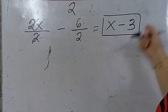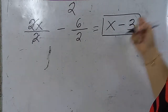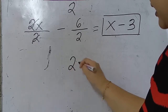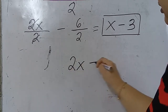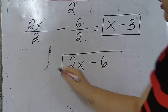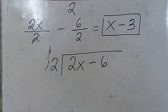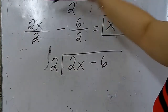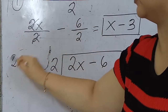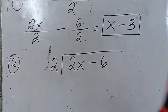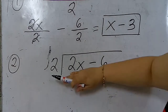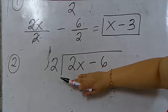What if it's not like that? There is another method. Let's do long division. This is another method — the second method. So this is long division, and this polynomial is divided by 2.